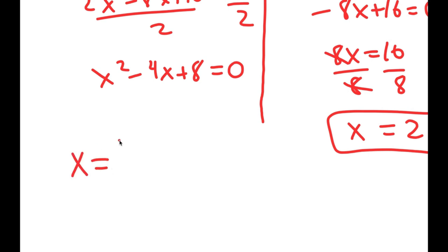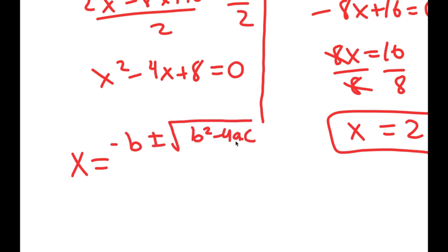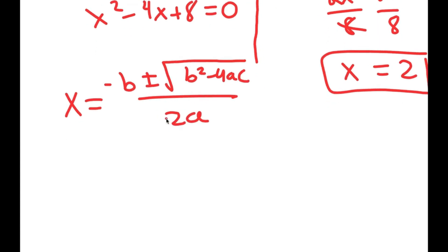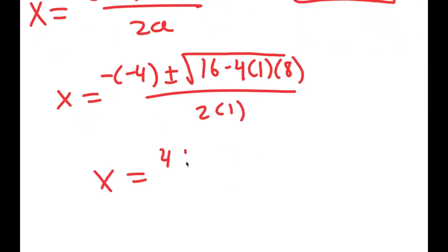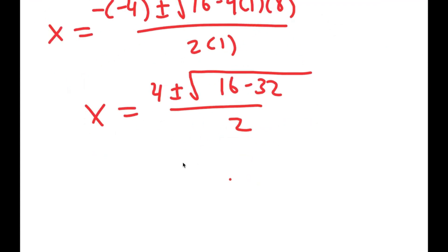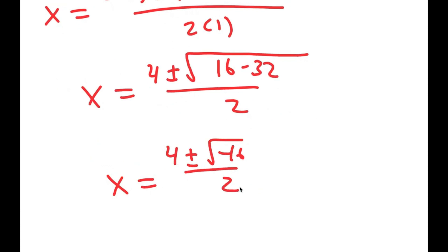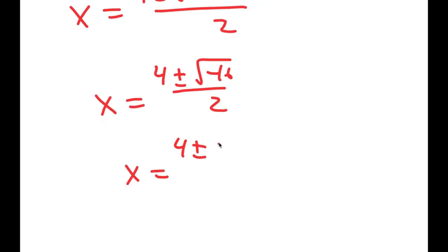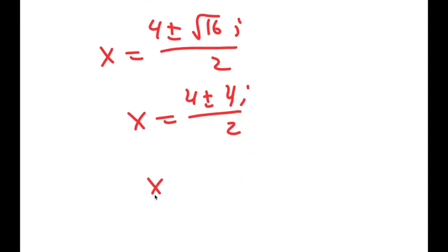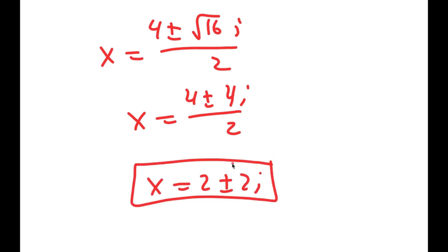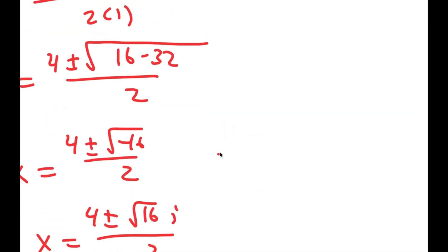Now for my left-hand side, I'm going to use the quadratic formula, which is negative b plus or minus the square root of b squared minus 4ac, all over 2a. So I get x equals negative negative 4 plus or minus the square root of 16 minus 4 times 1 times 8, all over 2 times 1. This is equal to 4 plus or minus the square root of 16 minus 32 over 2, which equals 4 plus or minus the square root of negative 16 over 2, which is 4 plus or minus 4i over 2. So these are my three solutions.